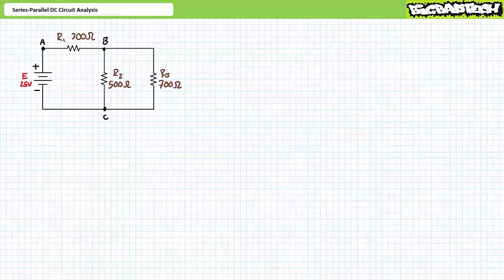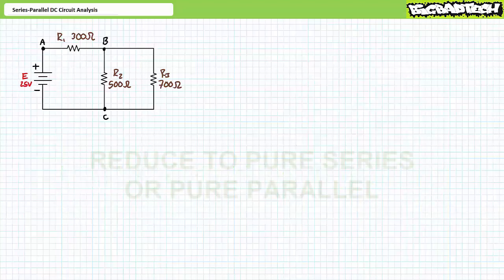My general advice is twofold. One: oftentimes series-parallel circuit analysis is traditionally taught using the reduce-and-return approach. Do not reduce and return. It is a waste of time and effort to simplify a series-parallel circuit into a single total resistance and then bushwhack backwards hoping you'll arrive at your intended destination without having lost something along the way. My preferred technique is to simplify the circuit of interest into one of two configurations — either a purely series simplification or a purely parallel simplification — and then apply pure series or pure parallel properties. Any further reduction to a single total resistance is like taking your car apart to look for a quarter you lost under the seat. Just look under the seat.